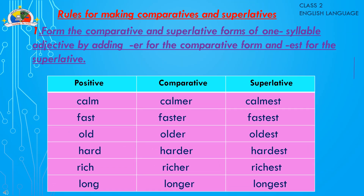For one-syllable adjectives, add '-er' for the comparative and '-est' for the superlative. For example: fast → faster → fastest. Other examples: calm → calmer → calmest; old → older → oldest; hard → harder → hardest; rich → richer → richest; long → longer → longest.